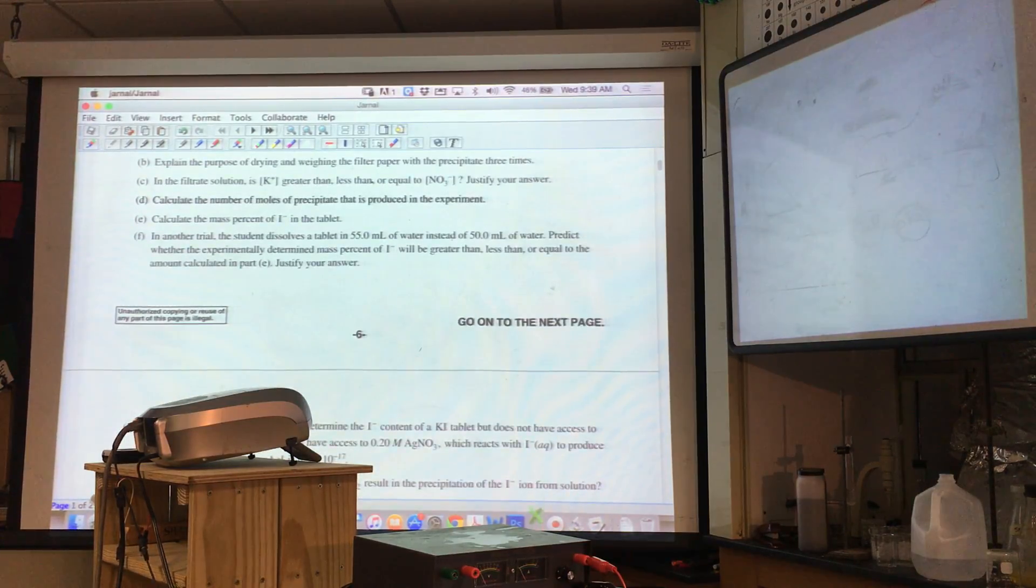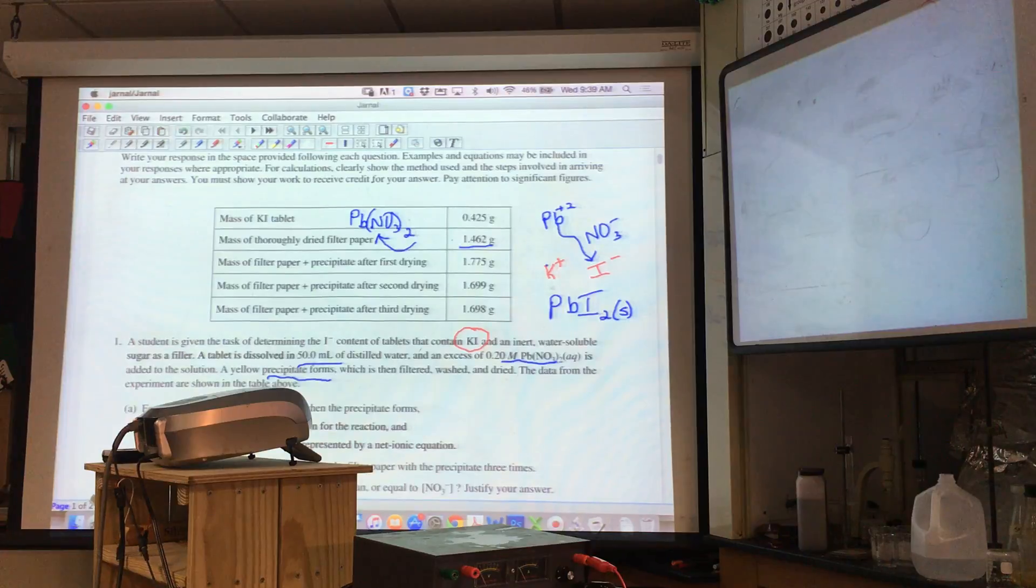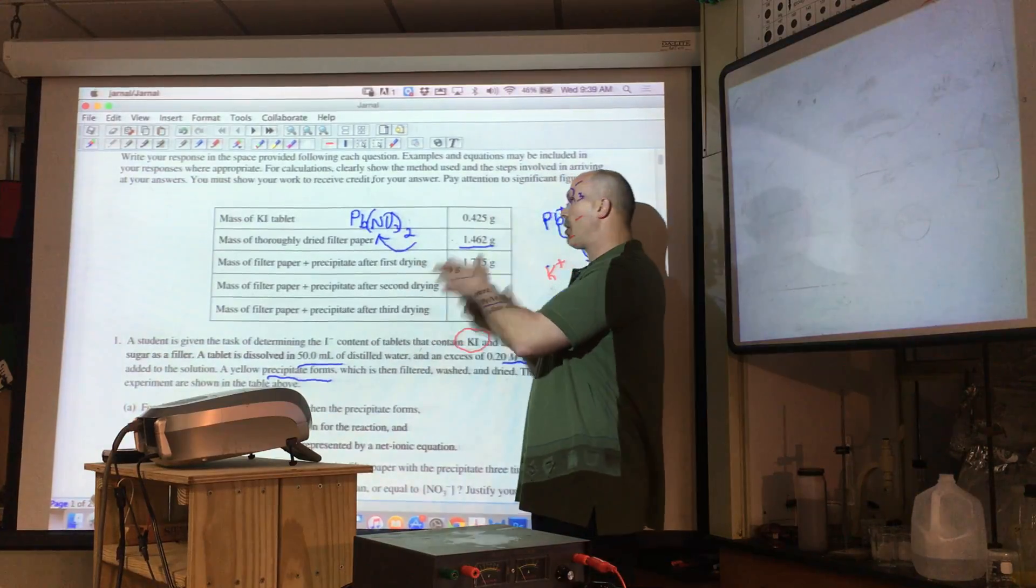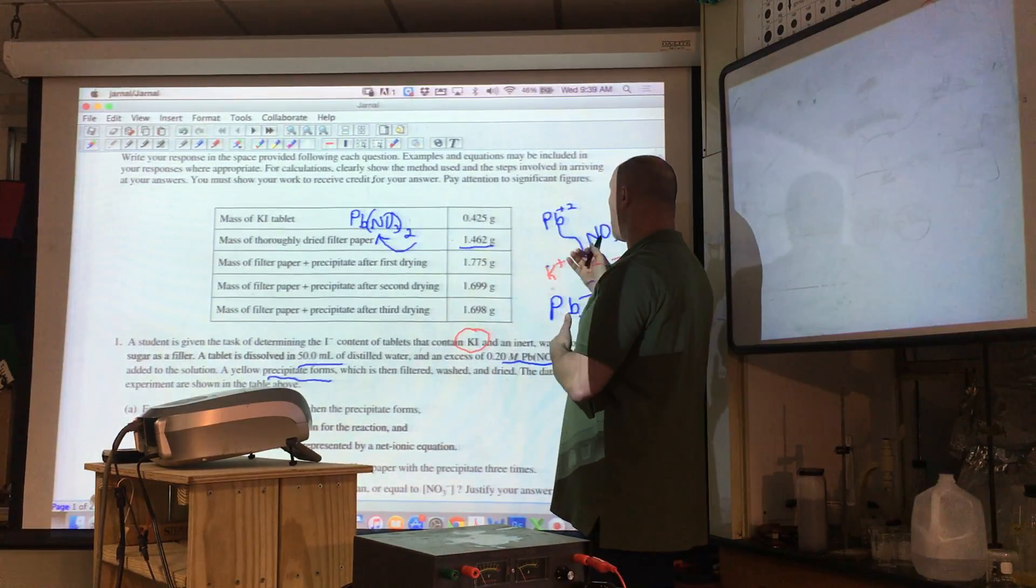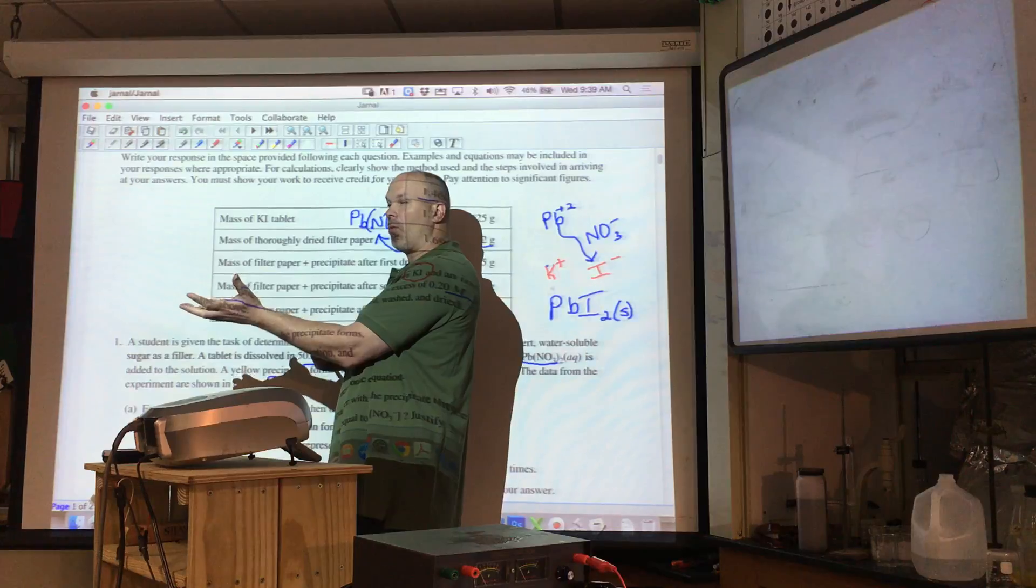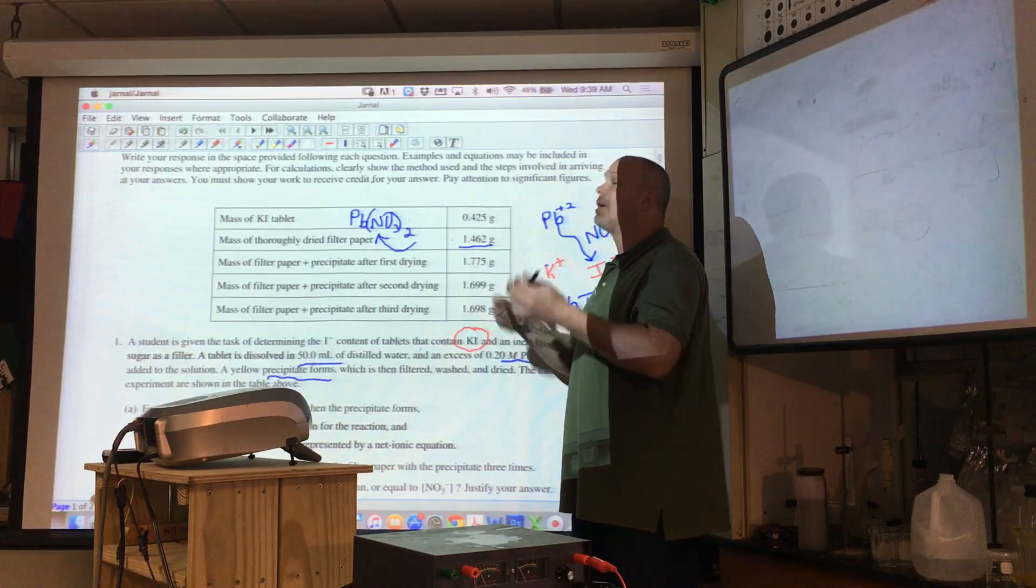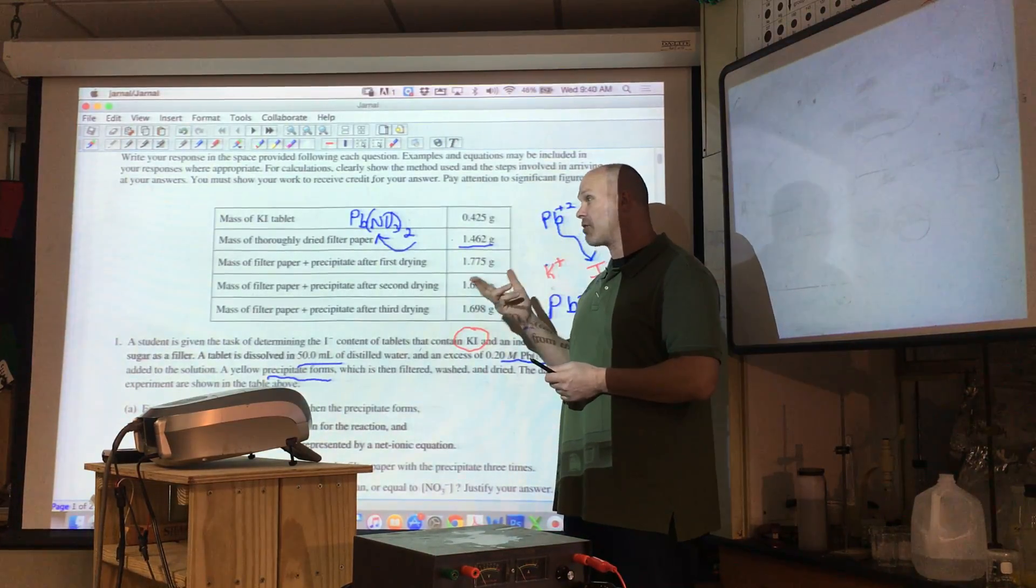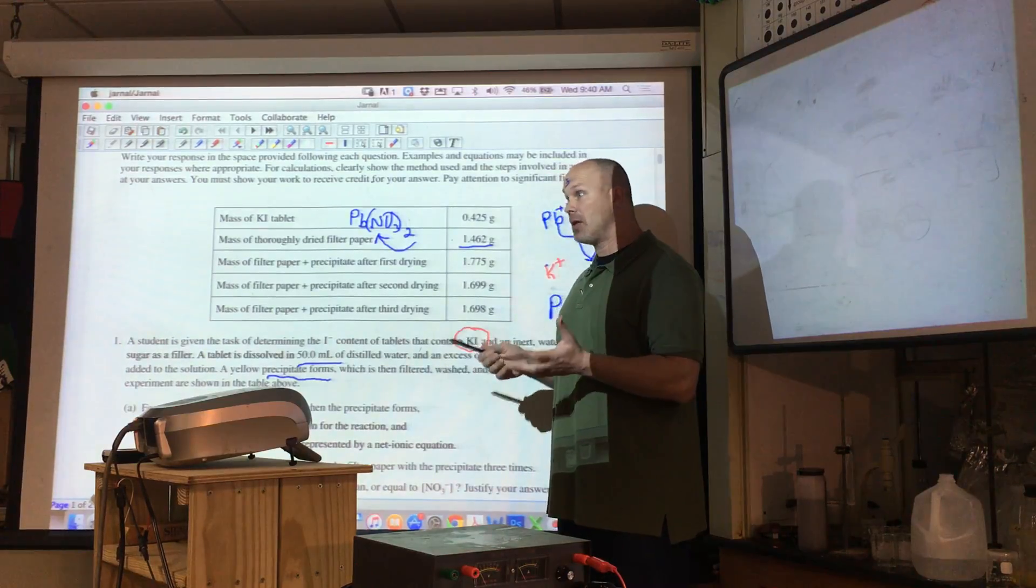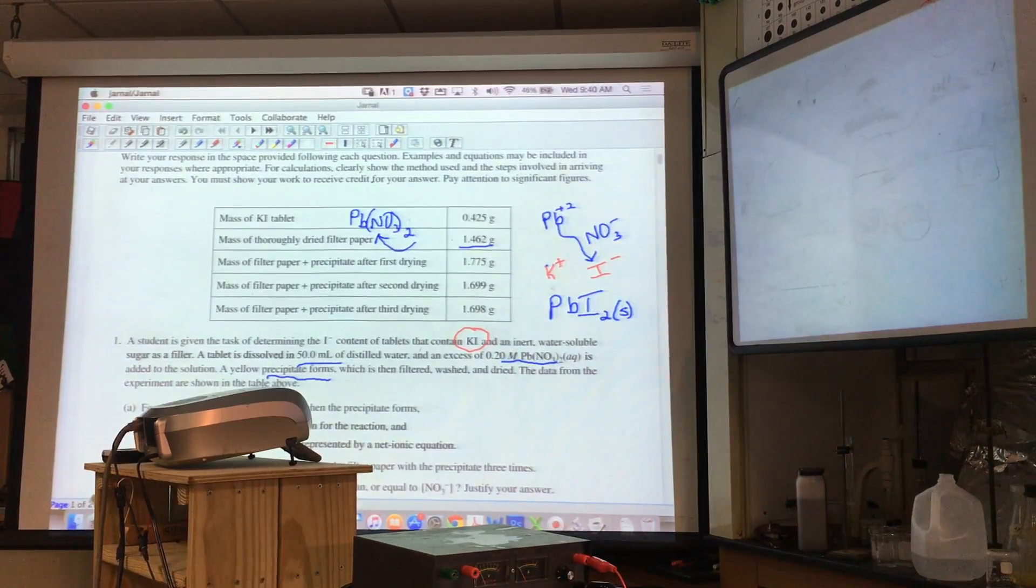Explain the purpose of drying and weighing the filter paper with the precipitate three times. Why am I taking the mass of the filter paper and the precipitate? We crush the tablet, put it in solution, add the other compound, precipitate, filter, put on filter paper, put it in an oven. Why bring it back out and keep re-weighing and keep reheating? Get rid of all the water. This sounds a lot like the hydrate labs. You're just making sure you're getting rid of all the water.